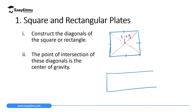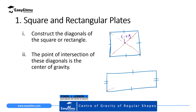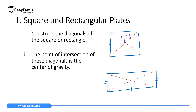For a rectangle, remember two sides are equal and the other two are also equal. To determine the center of gravity, draw diagonals from one end to the other, then another diagonal from the other side. Where these two diagonals meet, that is the center of gravity of that rectangle. To test this, place that point on the tip of a needle or a sharp pencil and it will balance out.